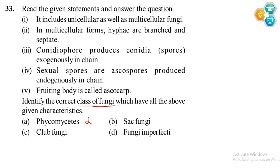Statement three: conidiophores are produced exogenously in chains. Statement four: sexual spores are absent — so Basidiomycetes, the club fungi, is definitely not the answer. And since sexual spores called ascospores are produced endogenously, this is another key clue.